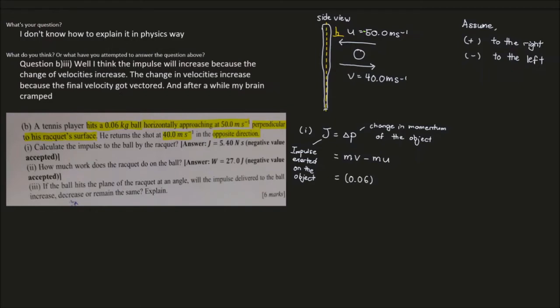Factoring out the mass, we have m(v − u) inside the bracket, where v is 40 and u is negative 50. Substituting everything in, the answer is 5.40 Newton-seconds. This is a positive impulse, meaning the impulse is pointing in the positive direction — to the right.